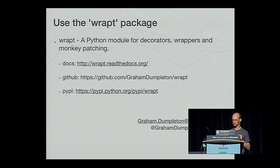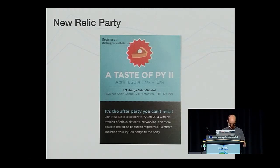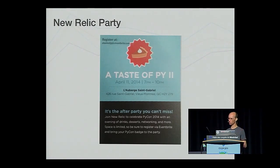I'll move into questions in a sec, but one more plug. I work for New Relic. The reason I know about all this stuff is because we do some serious monkey patching. We take your code, which you run in production, and I go in there and do lots of nasty stuff to it. This is why I worry about this stuff and make sure it works — because if I do something wrong and use a function closure, there are lots of cases where I'll break your code. So that's why I'm interested in all this.